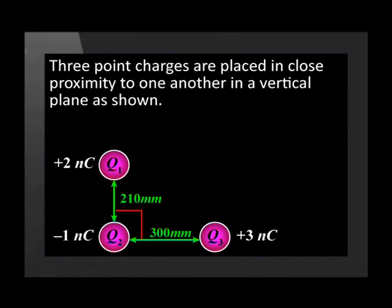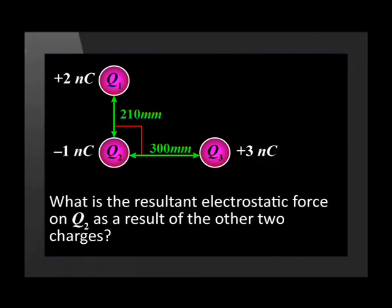Three point charges are placed in close proximity to one another in a vertical plane. The charges and distances between them are shown. What is the resultant electrostatic force on Q2 as a result of the other two charges?